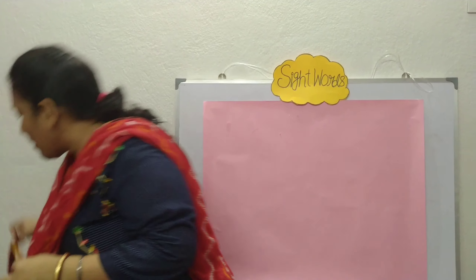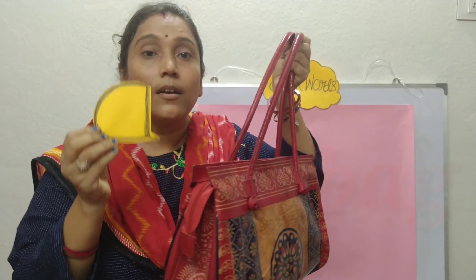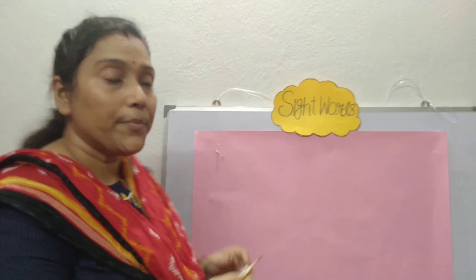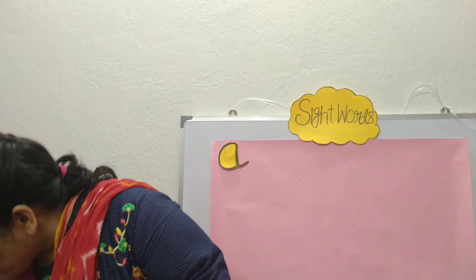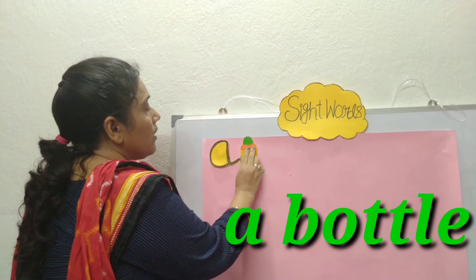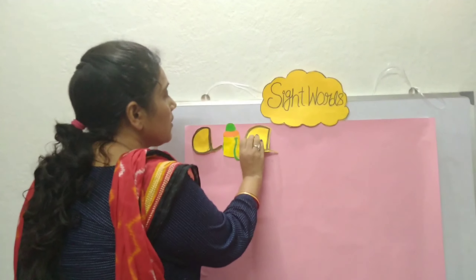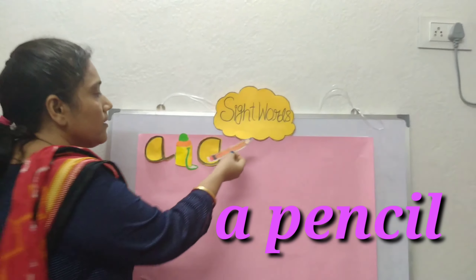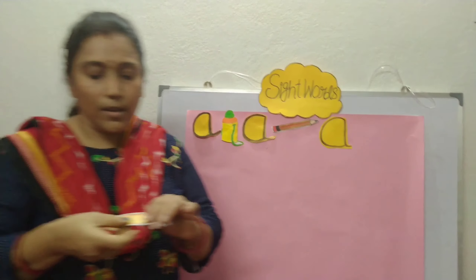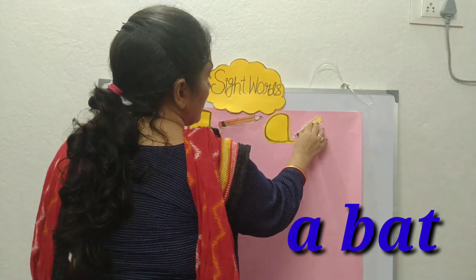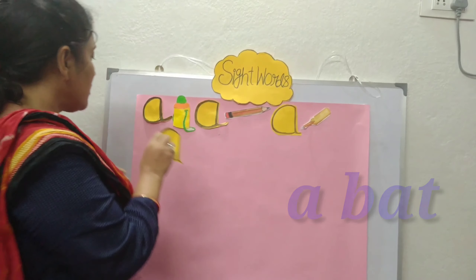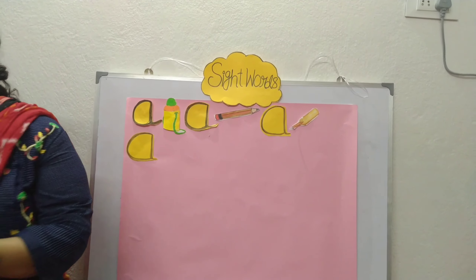My first sight word is 'a.' A book, a bag, a bottle, a pencil, a patch, a car.